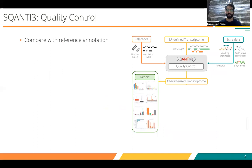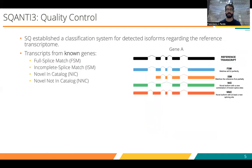About the SQANTI3 quality control step, which is the main feature of SQANTI, what we do is to compare the detected isoforms with the already annotated ones. SQANTI establishes a classification system for the detected isoforms regarding the already known reference transcripts. Transcripts from known genes will be catalogued as full splice match, incomplete splice match, novel in catalog, or novel not in catalog, depending on whether it is matching perfectly or partially to something already known.